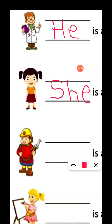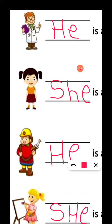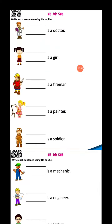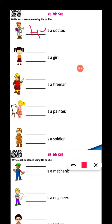He is a doctor. At E, she is a girl. At E, he is a fireman.